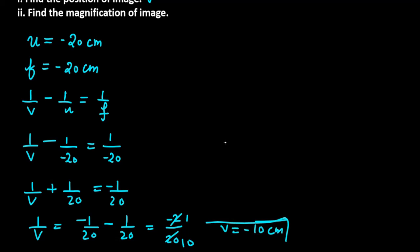V is minus 10 cm, which means the image is placed on the left side at minus 10 cm.